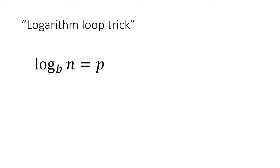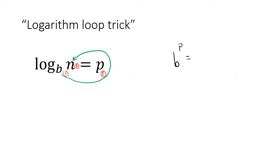The loop trick says: draw a loop on this. You're going to start drawing your loop at the base, and draw it in the direction of the equal sign — so it's going around the equal sign, then it circles back and hits the next thing. If we think about what letters this loop crossed in order: the first thing it passed was the base, the second thing was the answer P, and the third thing was the argument N. So in exponential form, we write: base to the power of the second thing (the answer), equals the third thing, which is N.